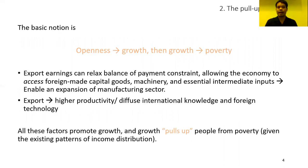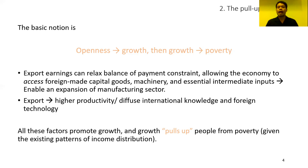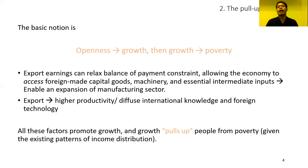The second channel is the pull-up effect. The basic notion is that trade openness can induce economic growth, and that economic growth will reduce poverty. Export earnings can relax balance of payment constraints, allow the economy to access foreign-made capital goods, machinery, and other essential intermediate imports, enabling an expansion of the manufacturing sector. Also, exports can indirectly result in higher productivity at the firm and industry level, diffusing international knowledge and foreign technology. All these factors promote growth, and that growth pulls people up from poverty.